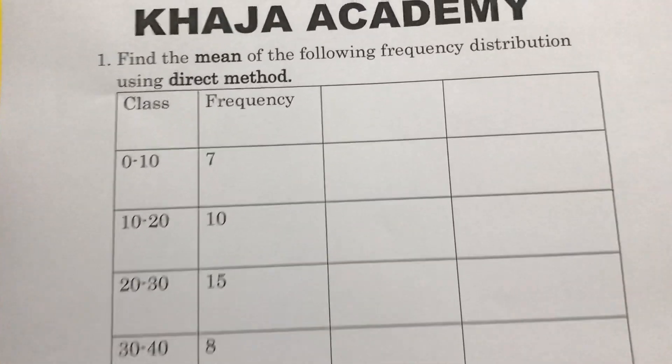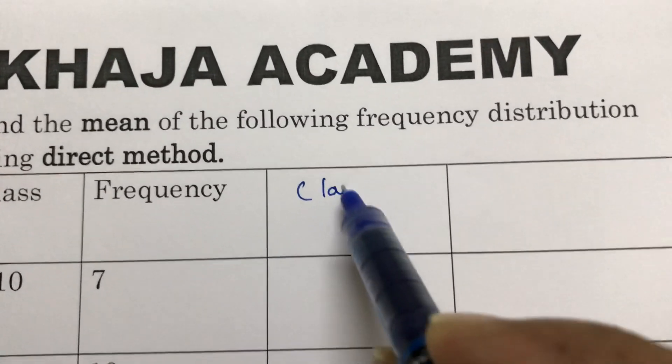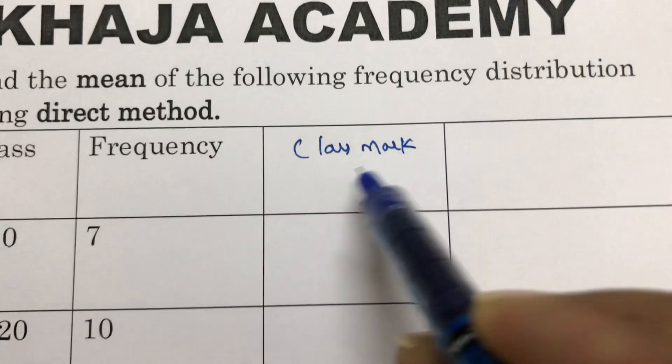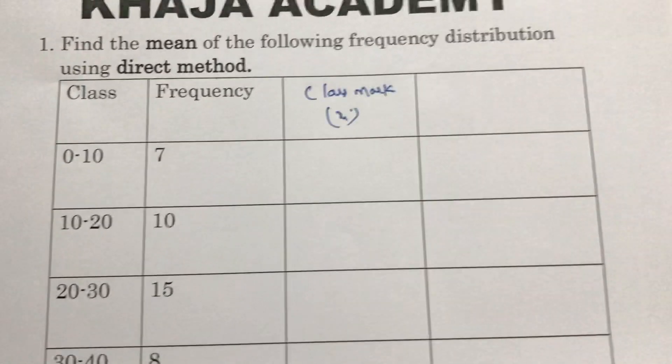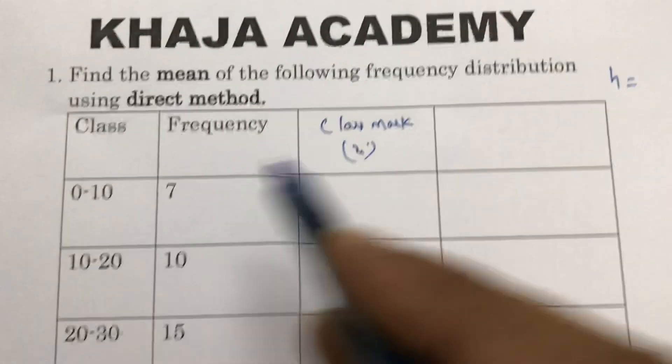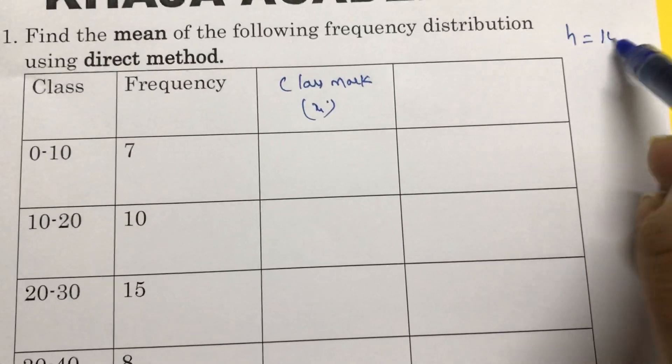First, for finding mean we need to find class mark xi. Before that, write h class size: 20 minus 10, that is 10.